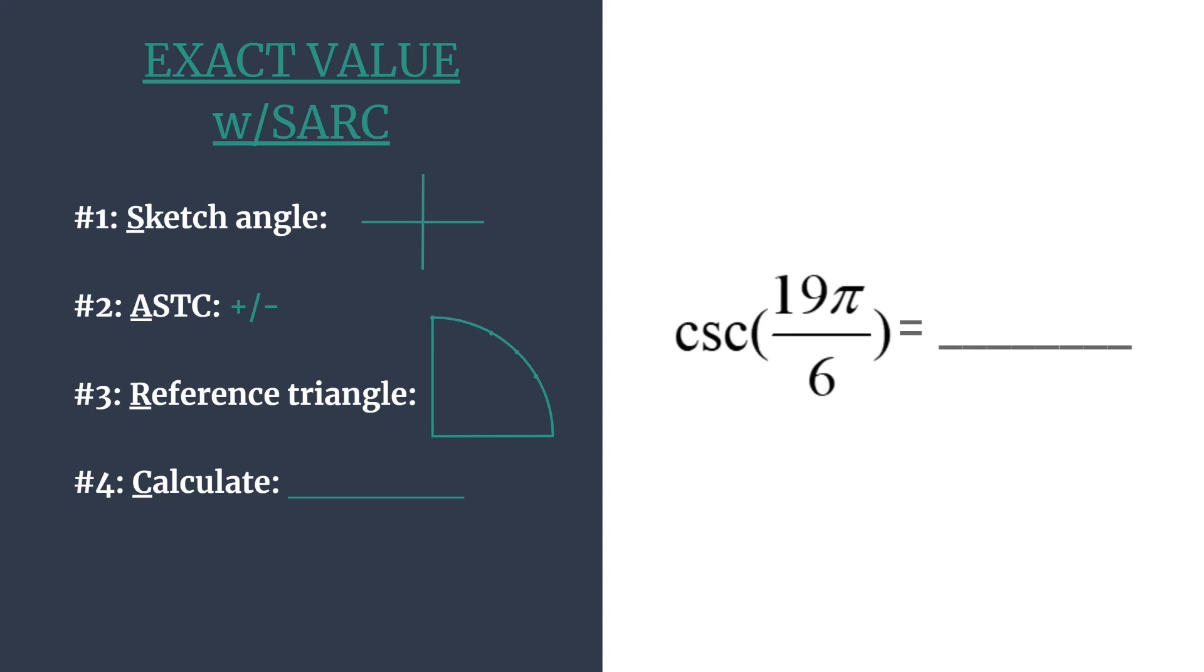So let's do this for the cosecant of 19π over 6. We first start by sketching our angle and notice that our angle is positive, so we're rotating in the counterclockwise direction. And also notice that it's more than one rotation because 2π is a full rotation. You can rewrite that as 12π over 6 and notice that of course 19π over 6 is greater than that. So our angle is more than one rotation.